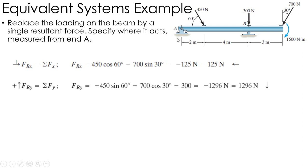The Y component of the resultant force is going to be 450 sine 60. These are all negative. They're all acting down. Then I have 700 cosine 30, and then I have 300 acting straight down. So I've got those three forces right here. Sum those up, and I have negative 1296 or 1296 newtons acting straight down. So this is my resultant force.